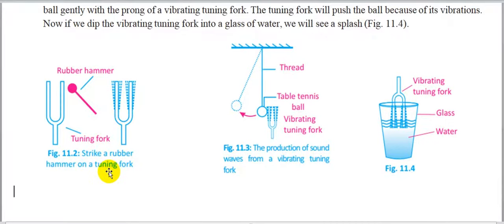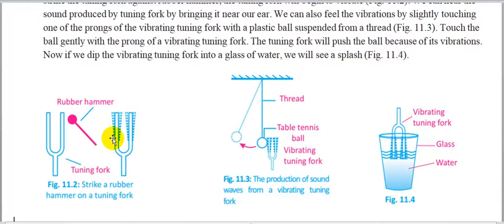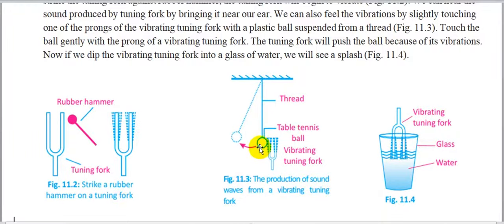If we hold this tuning fork close to our ear, we notice a very faint sound causing sensation in our ears. This means that whenever any object is vibrated, sound waves are generated. To detect these sound waves, we perform another experiment: we hit the tuning fork with a rubber hammer, then bring the vibrating tuning fork close to a suspended bob. The bob will start to vibrate about its mean position, meaning the vibrations of the tuning fork are transferred to the bob.